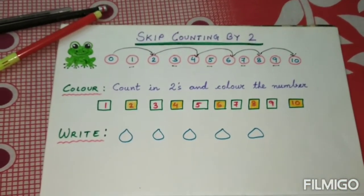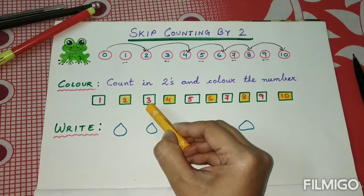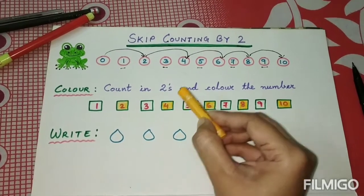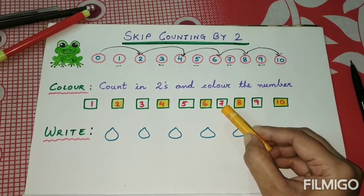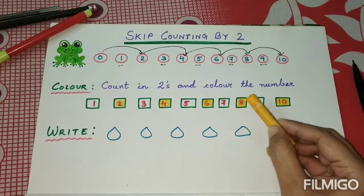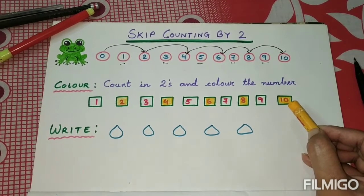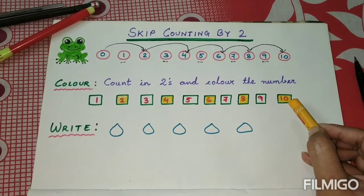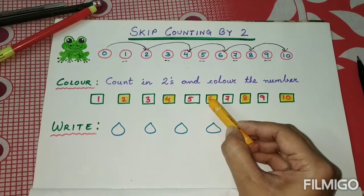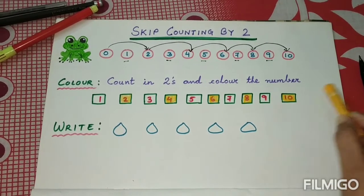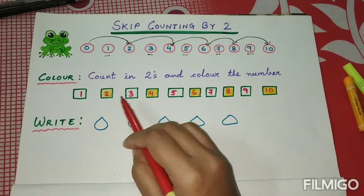So the first colored number is two. Then we skipped number three and went to number four. Then we skipped number five and went to number six. Then we skipped number seven and went to number eight. Then we skipped number nine and went to number ten. So skip counting by two gives us the numbers: two, four, six, eight, and ten.